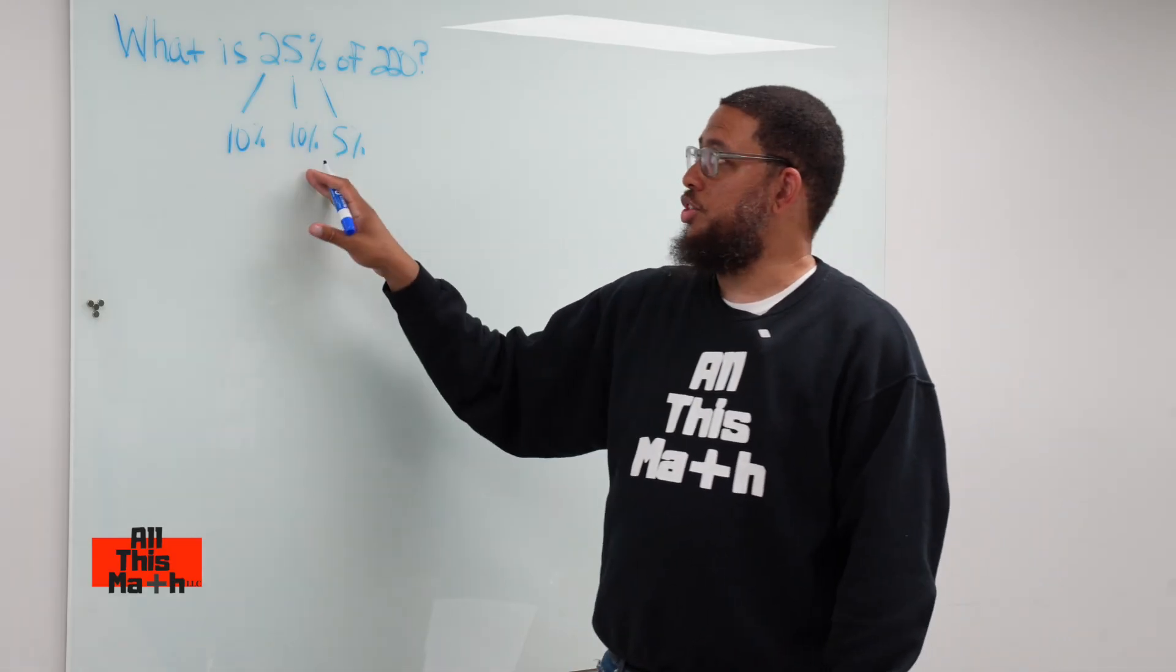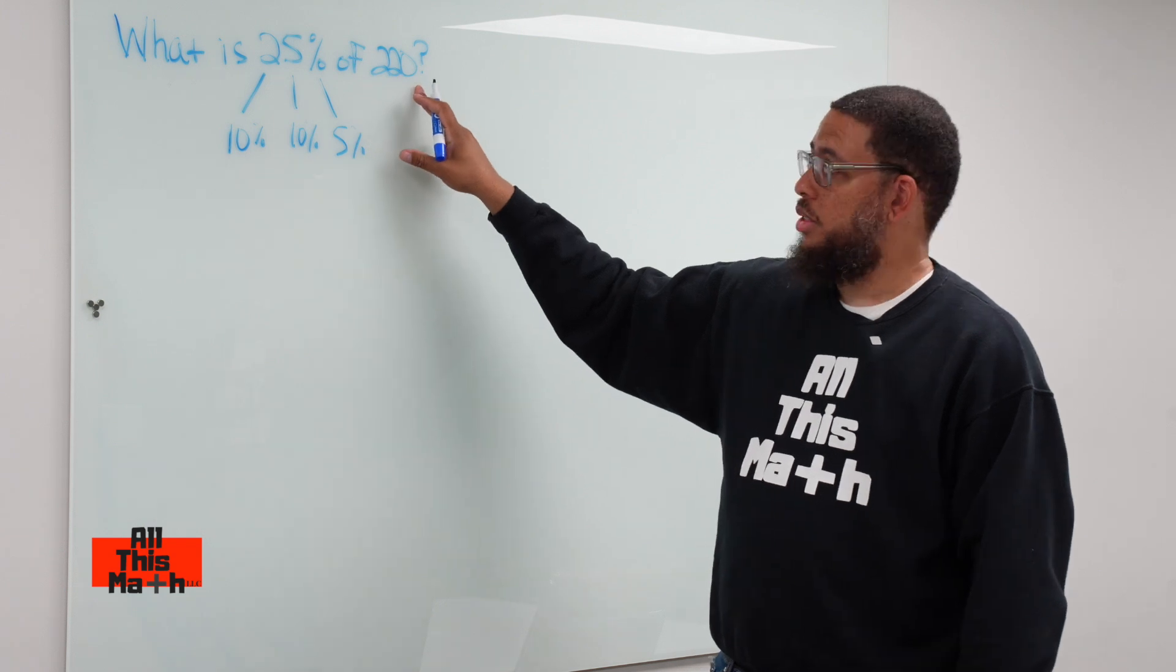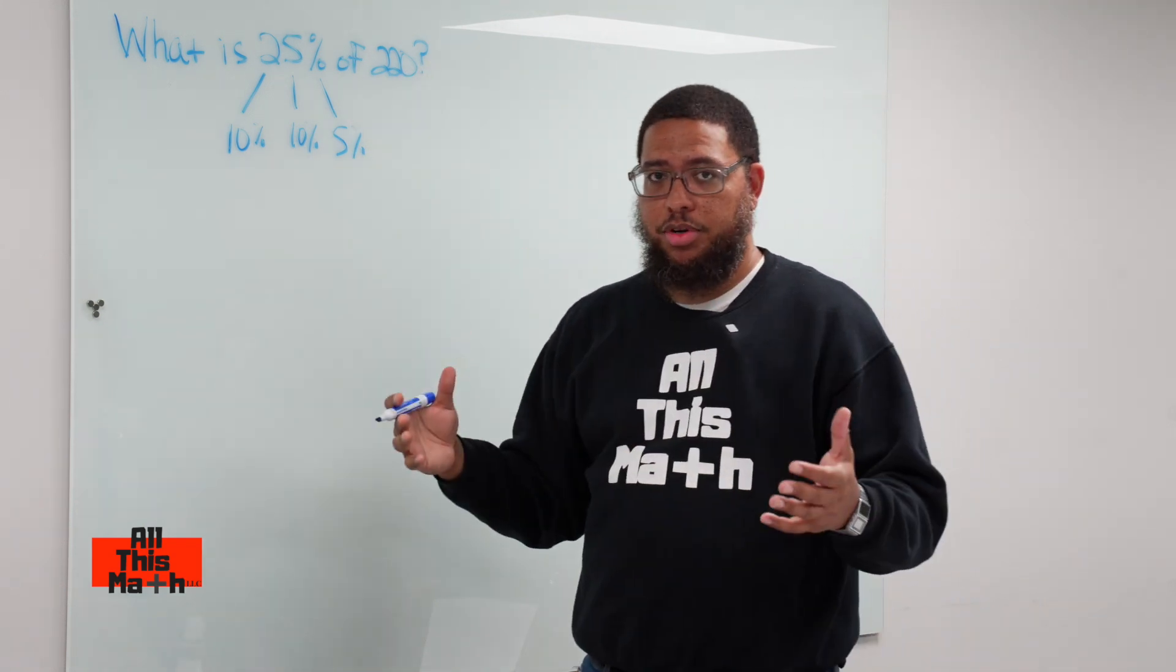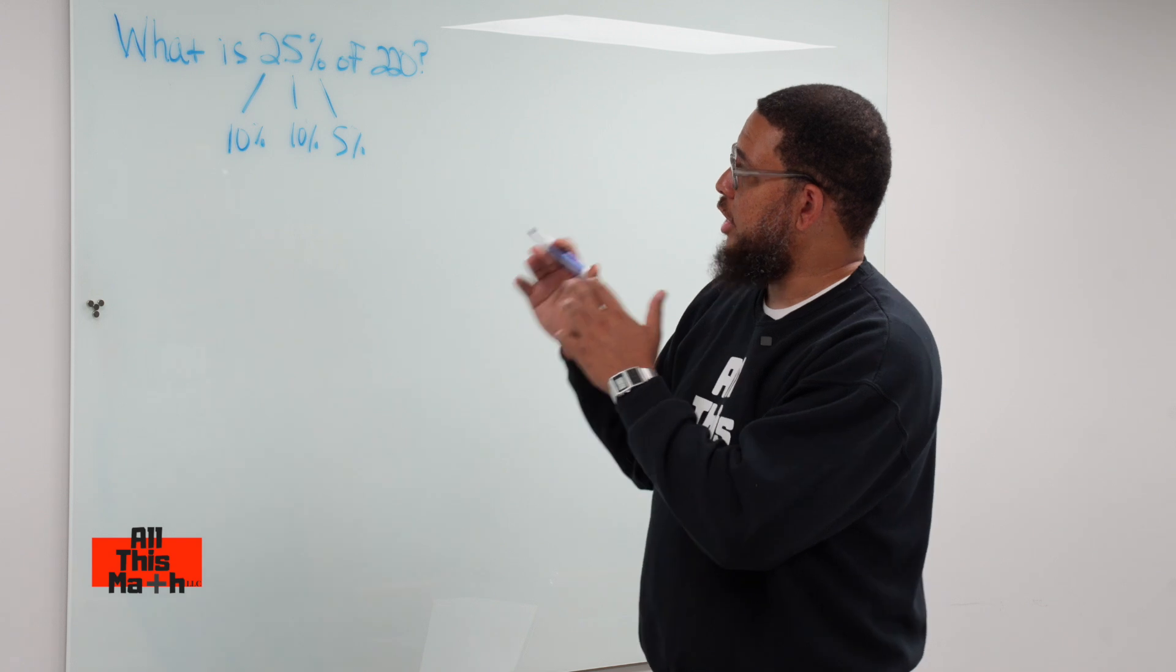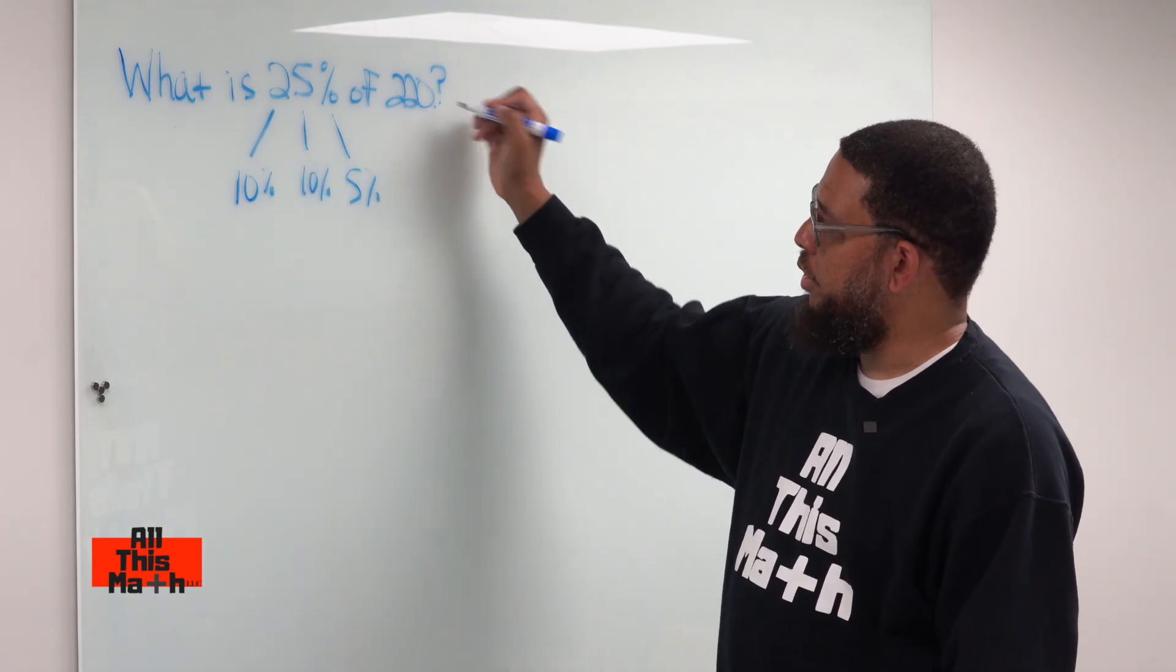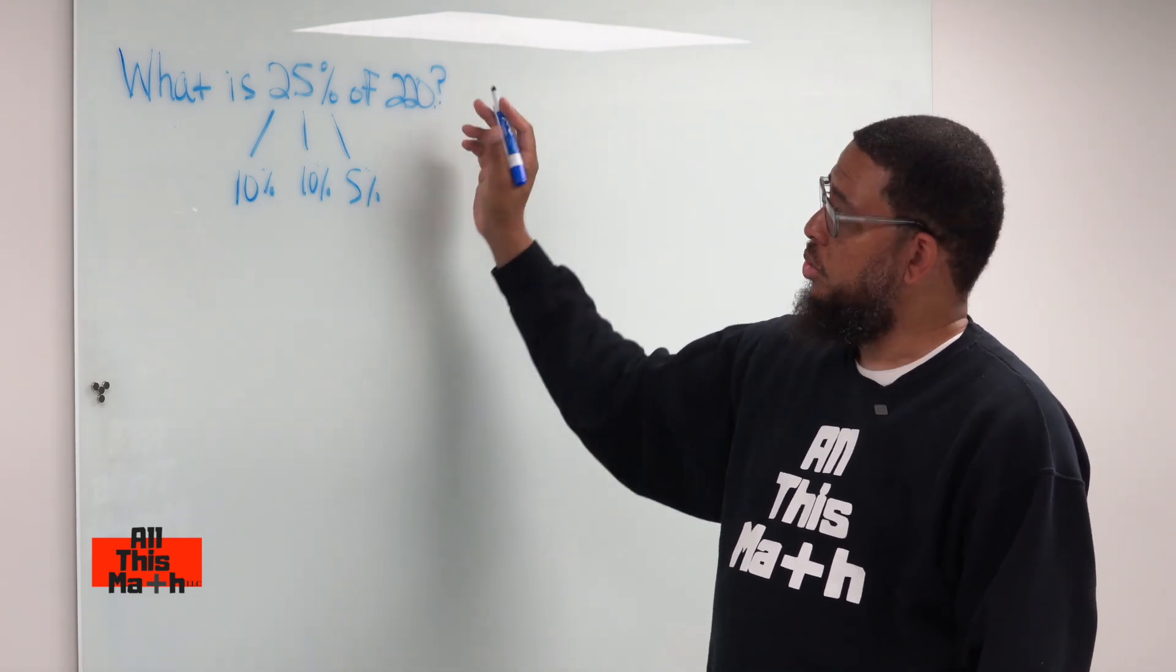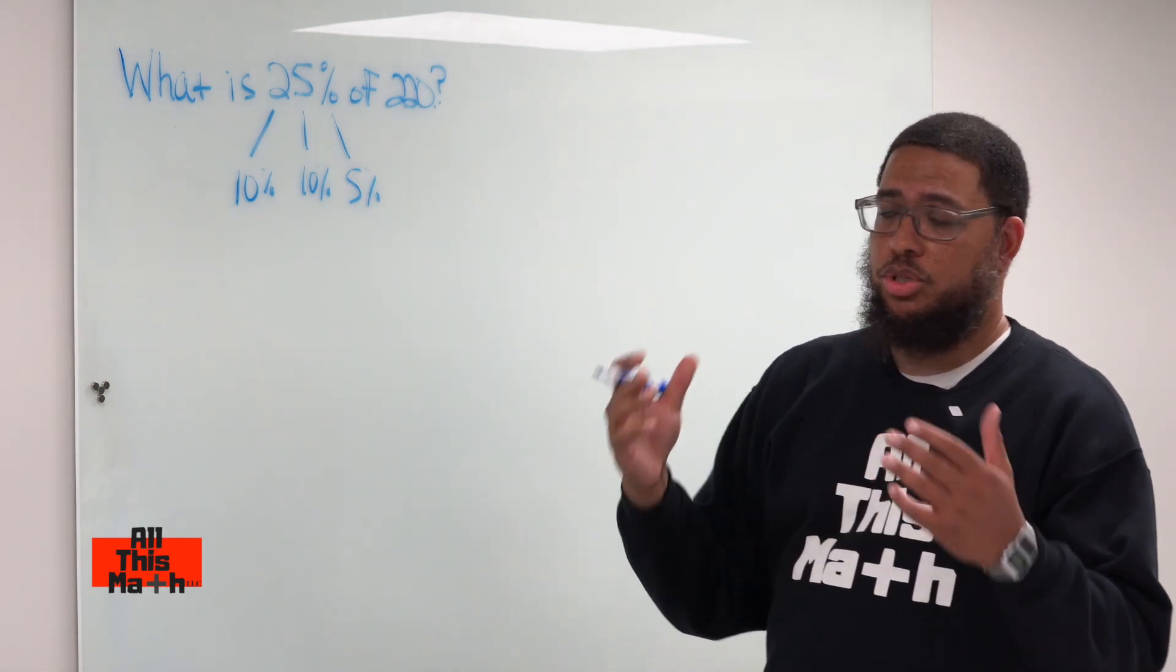So like I said, 10% is your friend. Let's figure out what 10% of 220 is. All we need to do to know what 10% of any number is, is identify where the decimal point would be. There's no decimal point written, but it would be right here. And we essentially slide the decimal point one space to the left. So 10% of 220 is 22.